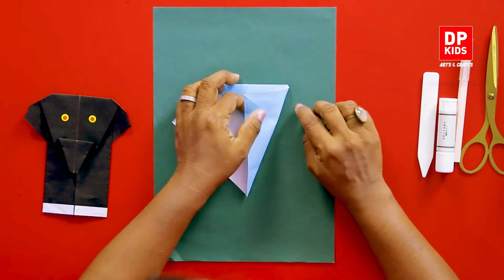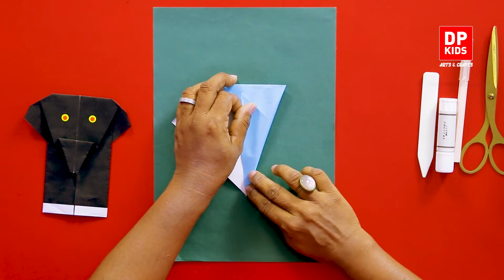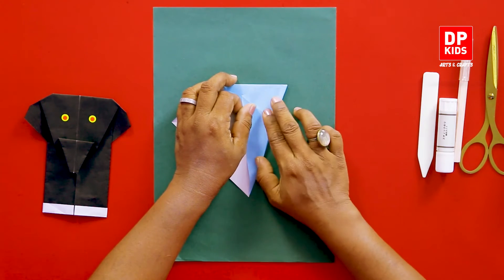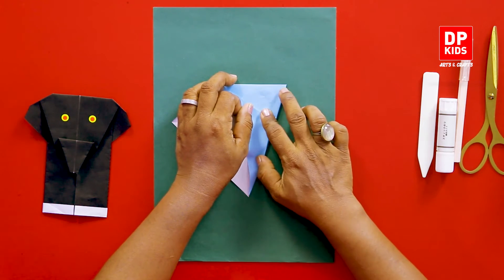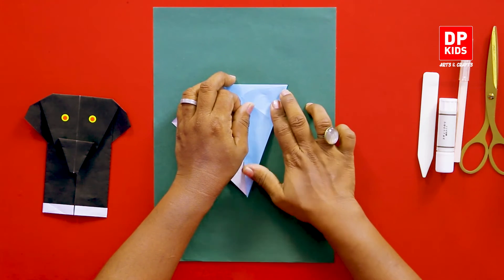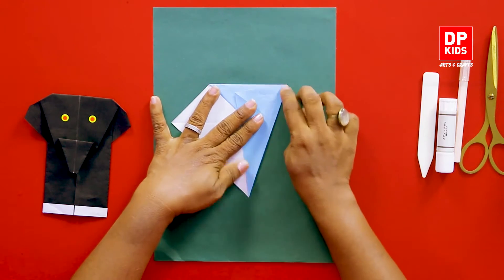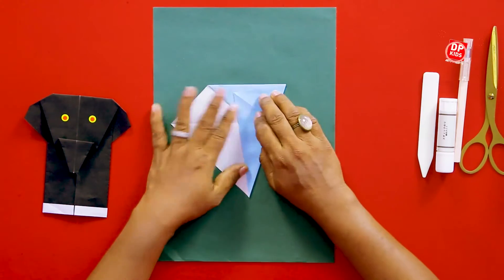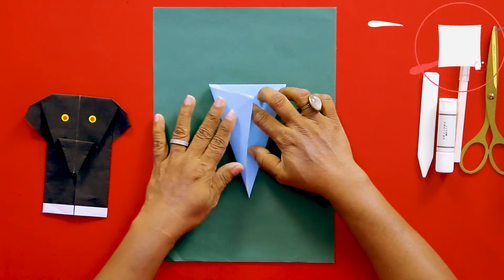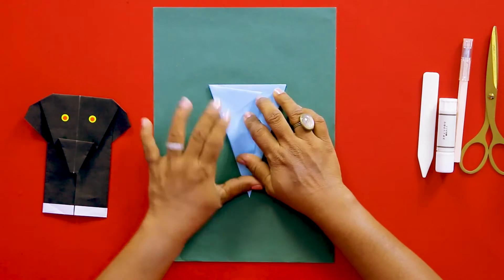Now you have to be very careful with how you do this. This corner has to align with this corner. Press it down. Now it's easy to do on the other side. Do the same thing there.